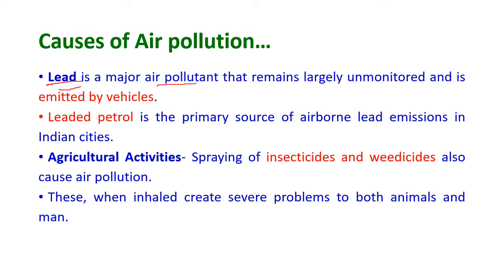Lead is a major air pollutant that remains largely unmonitored and is emitted by vehicles. Leaded petrol is the primary source of airborne lead emissions in most cities. During agricultural activities, the spraying of insecticides and weedicides can also cause air pollution. When inhaled by human beings, these insecticides and weedicides create severe problems for both animals and humans.